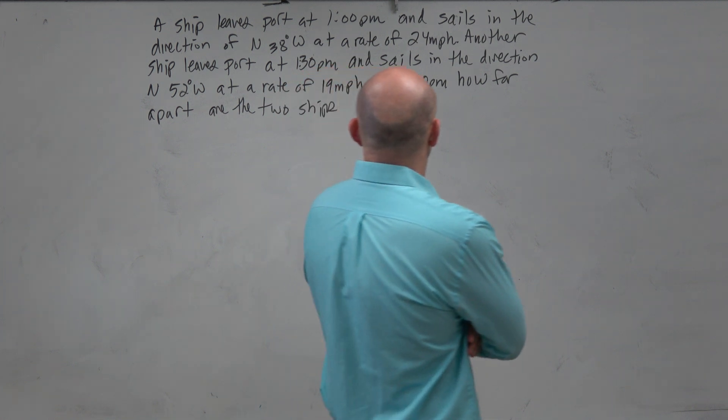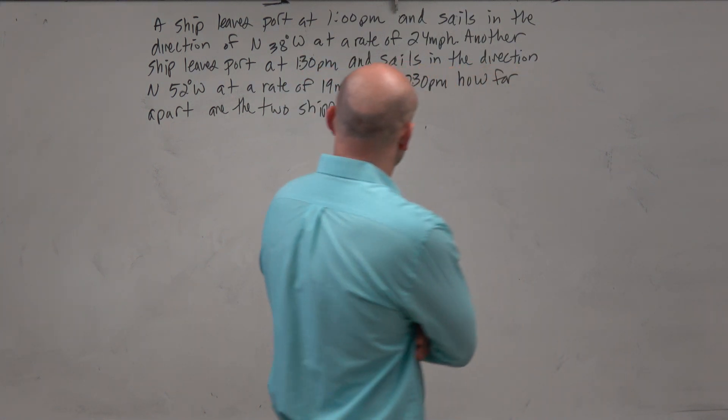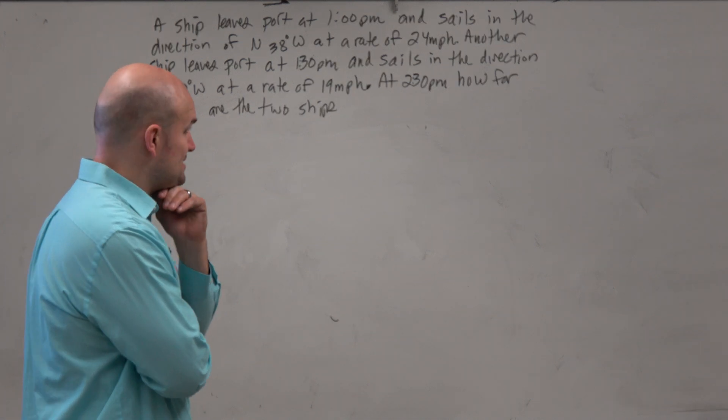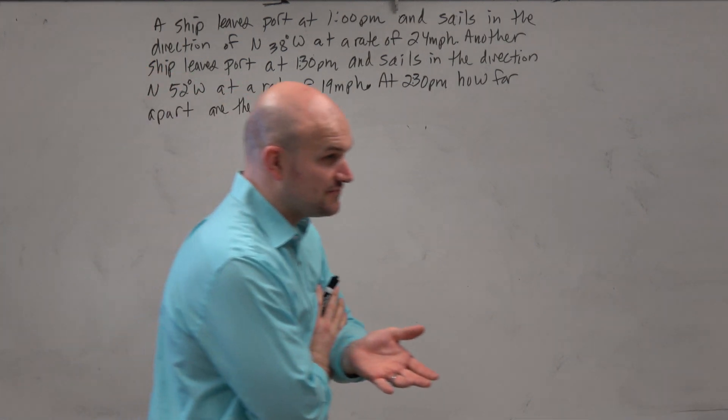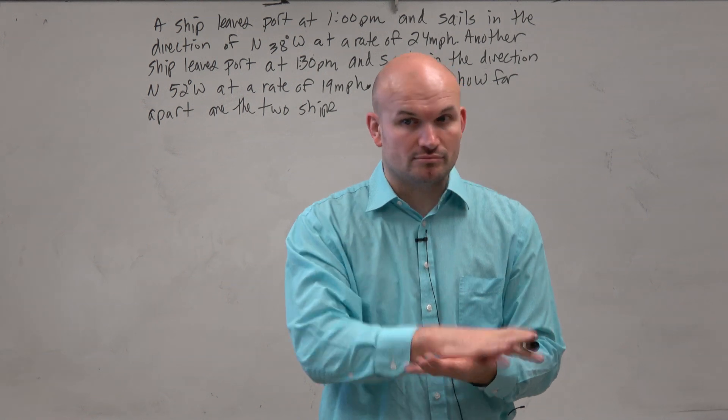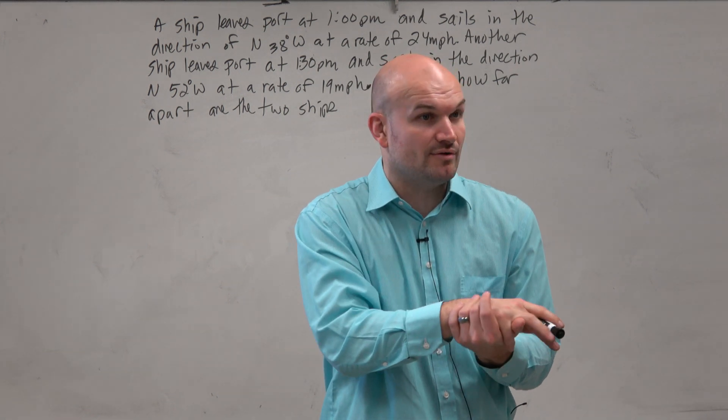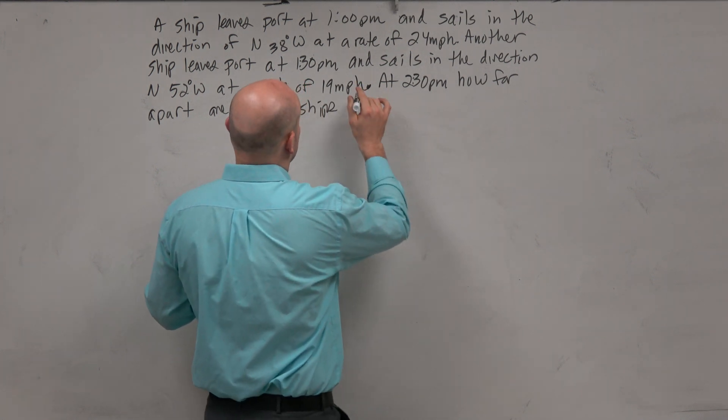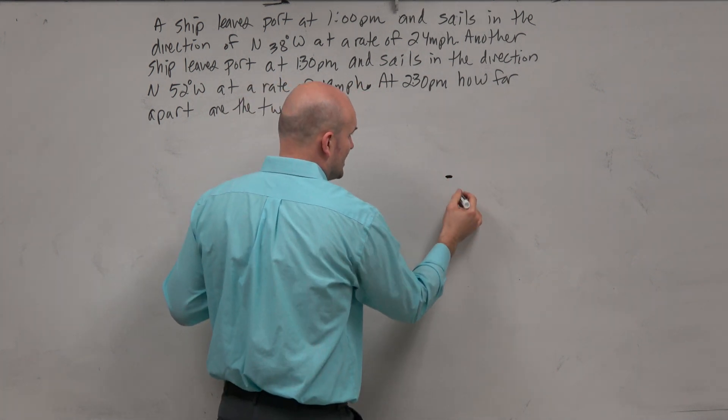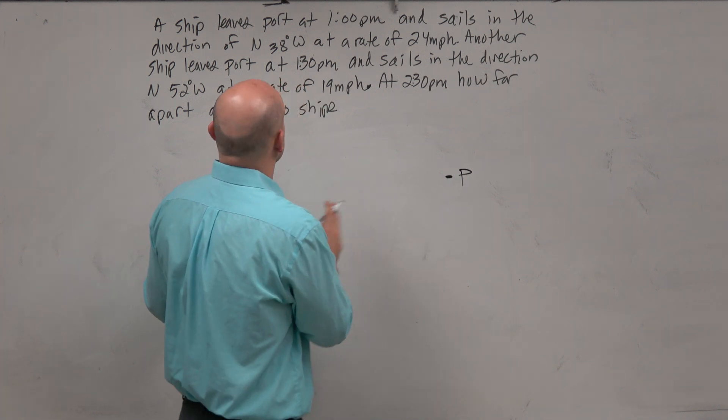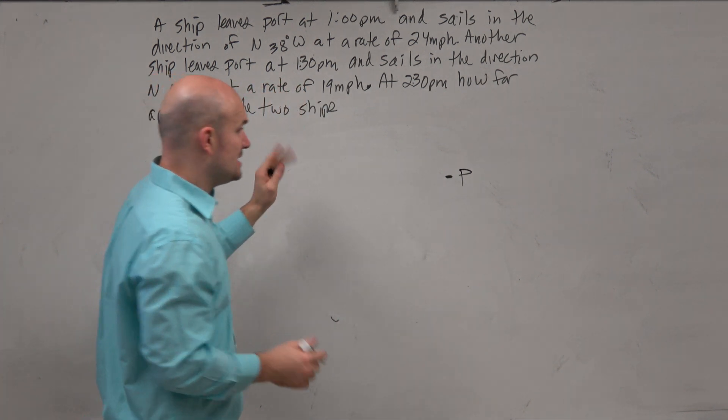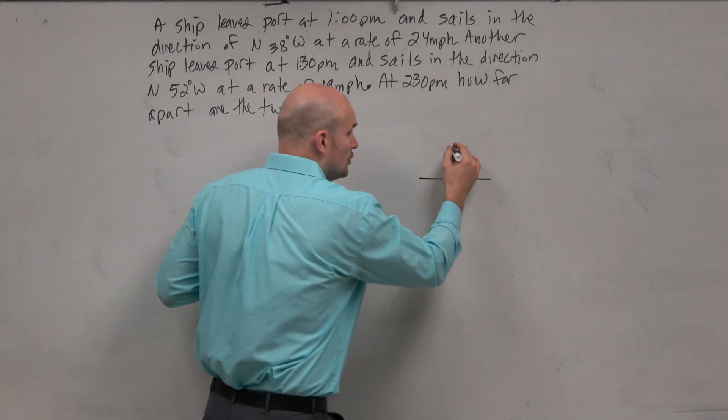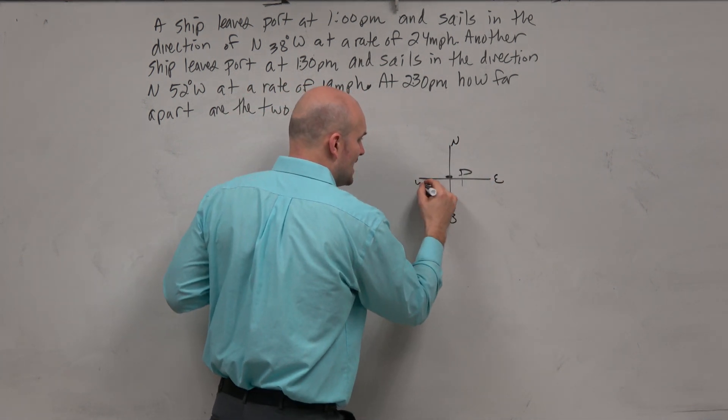So in this case, we have a ship leaves port at 1 o'clock and sails in the direction of north 38 degrees west. One thing that I've told you from the beginning is when you see those directions, we need to go ahead and write our cardinal directions here. So if we have port, I'm just going to put a dot here. There's port. Now we're going north. They're sailing out north 38 degrees west. So I'm going to draw my compass heading. North, east, south, west.